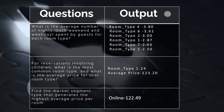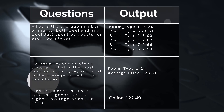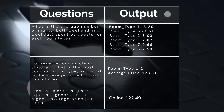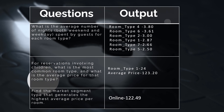Question 13 — average number of nights (both weekend and weekday) spent by guests for each room type: Room Type 4 averages 3.80, Room Type 6 averages 3.61, Room Type 2 averages 3.00, Room Type 1 averages 2.87, Room Type 7 averages 2.66, Room Type 5 averages 2.50. Question 14 — for reservations involving children, the most common room type is Room Type 1 with 24 reservations, and the average price is 123.20. Question 15 — market segment generating the highest average price per room: answer is Online with 122.49.